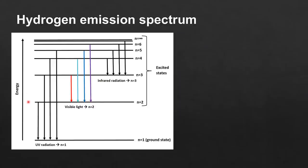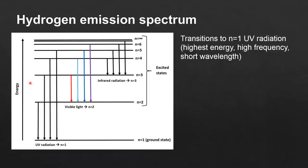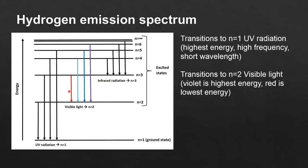Next we look at the hydrogen emission spectrum. Here we can see the different types of electromagnetic radiation emitted as electrons transition from higher to lower energy levels: UV radiation, visible light, and infrared radiation. Electron transitions to n equals 1, the ground state, correspond to UV radiation, which is the highest energy, with high frequency and short wavelength. Electron transitions to n equals 2 correspond to visible light.